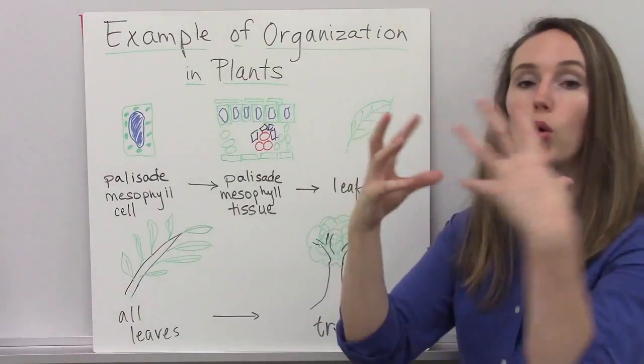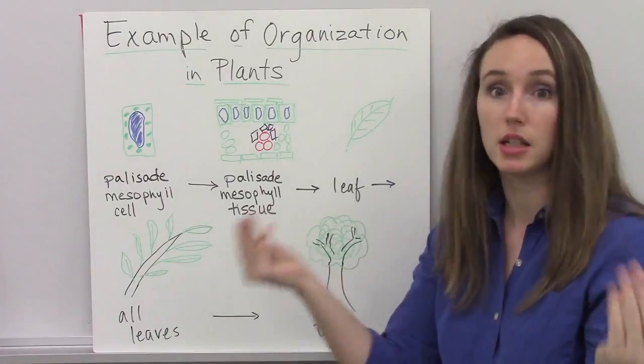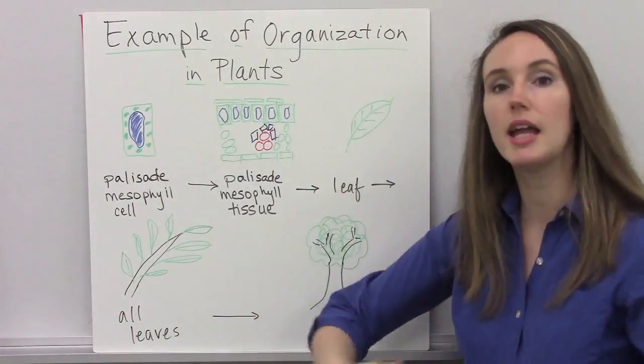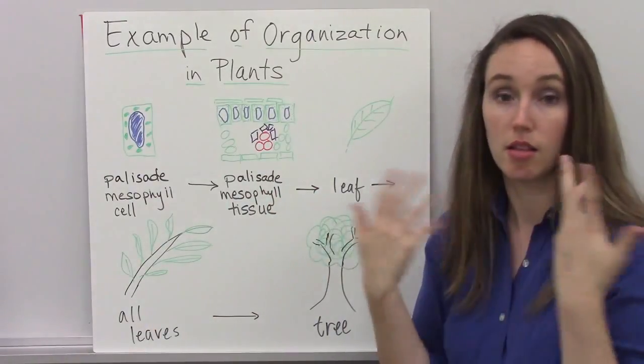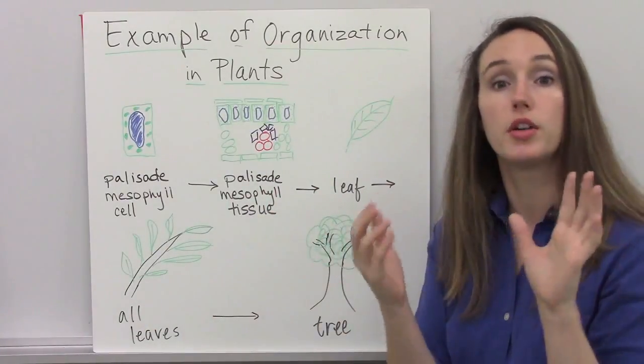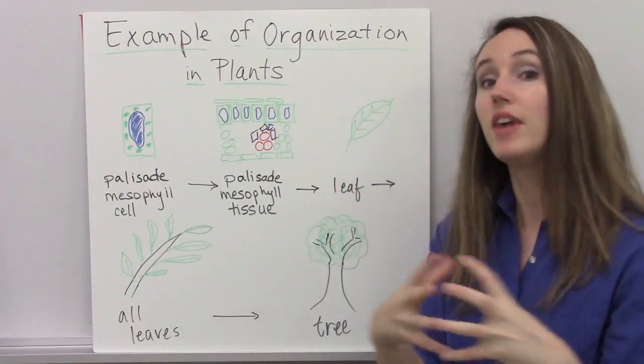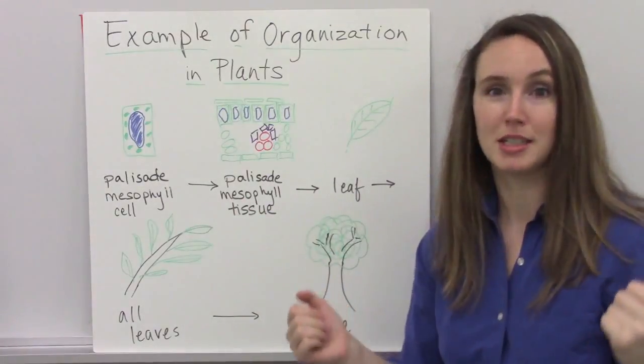Then an organ system within a plant, a tree, would be all the leaves together. And they function to do photosynthesis in the plant. And then you put all your leaves and stems and roots and flowers or cones and vascular tissue together, and now you have an entire tree.